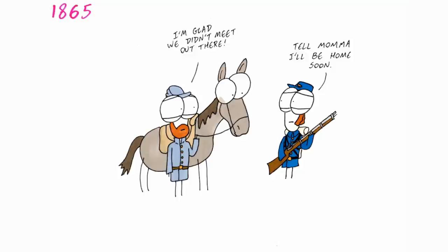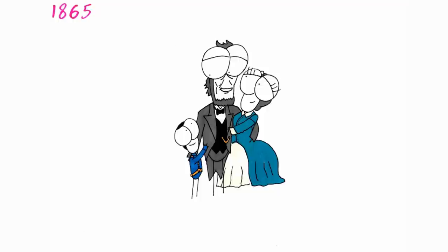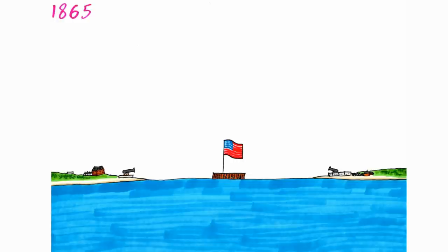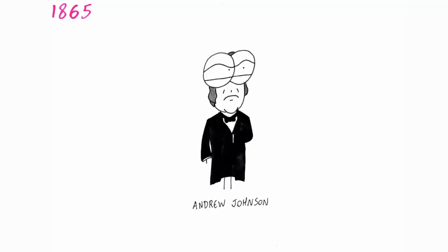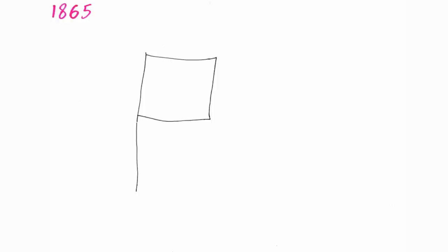Grant would not arrest the Confederate army and they could keep their sidearms and horses. News of the surrender spread and celebrations erupted in Washington. On April 14th, days later, the stars and stripes was raised over Fort Sumter where it all began. That evening, Abraham Lincoln went to a play with his wife in Ford's Theatre, where he was shot by John Wilkes Booth and later died. Vice President Andrew Johnson became President. Throughout May, the remainder of the Confederacy forces surrendered and the Civil War ended.